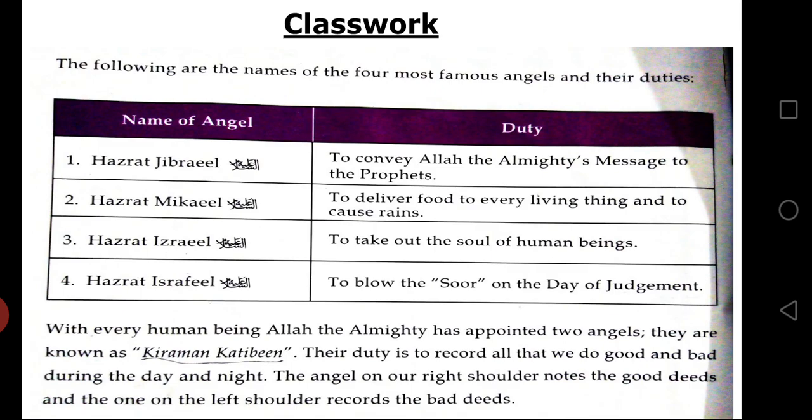Now look at what is written under the column. With every human being, Allah the Almighty has appointed two angels. They are known as Kiraman Katibin. Their duty is to record all that we do — good and bad — during the day and night. The angel on our right shoulder notes the good deeds, and the one on the left shoulder records the bad deeds.